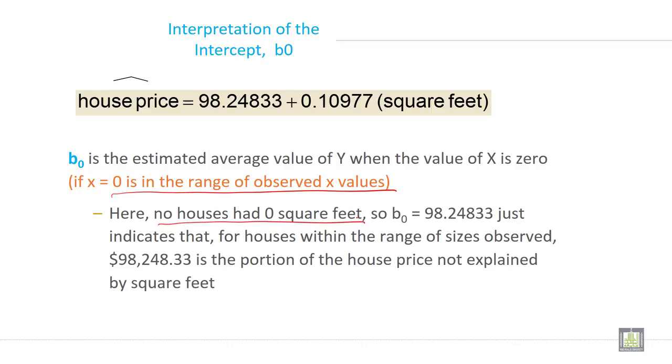So b0 equals 98.24833 just indicates that for houses within the range of size observed, $98,248.33 is the portion of the house price not explained by square feet because this is constant.